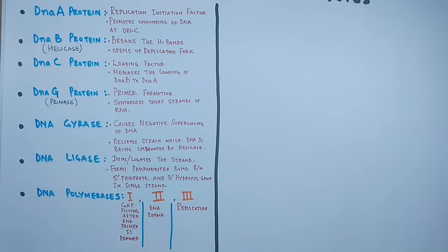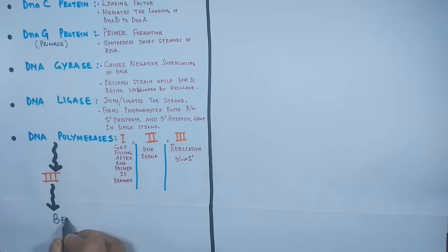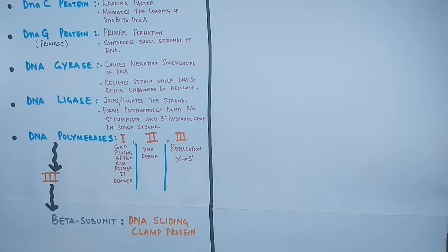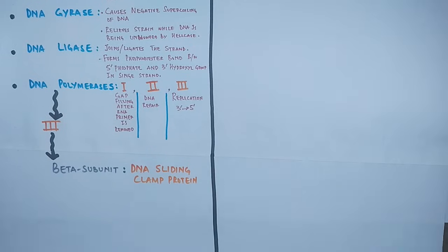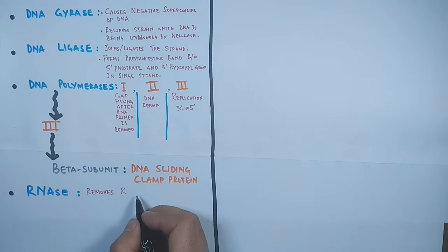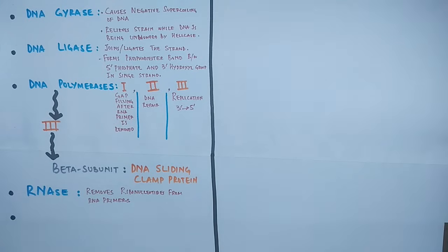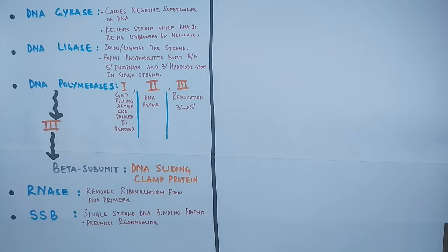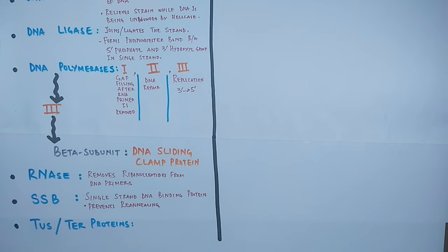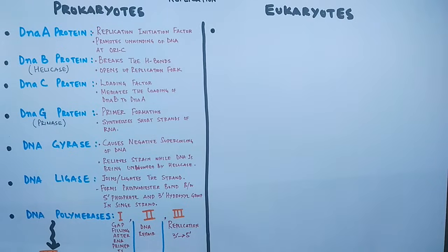DNA polymerase III mediates the DNA replication process in prokaryotes. Also remember that the beta subunit of DNA polymerase III acts as a DNA sliding clamp protein — it grasps the DNA so that DNA polymerase shows processivity. Then we have RNase H enzyme, which removes ribonucleotides from RNA primers. There are also SSB proteins — single-strand binding proteins — which prevent reannealing. Finally, we have Tus and Ter proteins, which terminate DNA replication by halting the movement of the helicase enzyme.